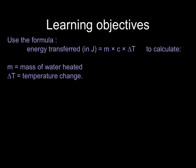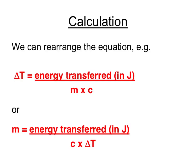At higher level, you also need to be able to rearrange this formula in order to find out the mass of the water heated or the temperature change — in other words, to rearrange so that the mass is the subject or that delta T, the temperature change, is the subject. We can do this using one of these triangles. In this case, the triangle would have mass, specific heat capacity, and temperature change along the bottom, and energy up top.